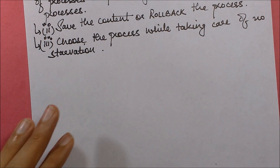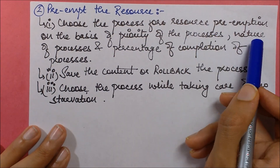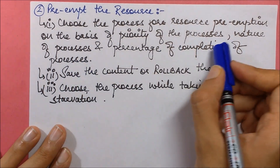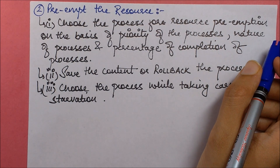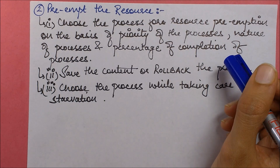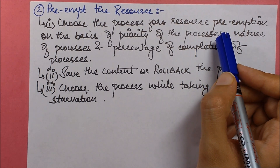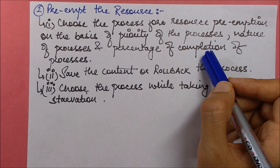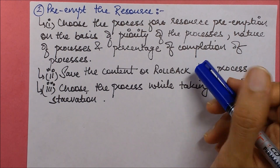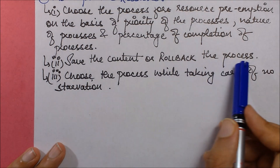The second way out is to preempt resources. Choose a process for resource preemption based on priority, nature of the process, and percentage of completion. For example, you can preempt resources from a newly started process and give them to one near completion. On the basis of priority or deadline, preempt resources from lower-priority processes. If a process is taking too long and causing others to deadlock, preempt its resources and give them back to all other processes.